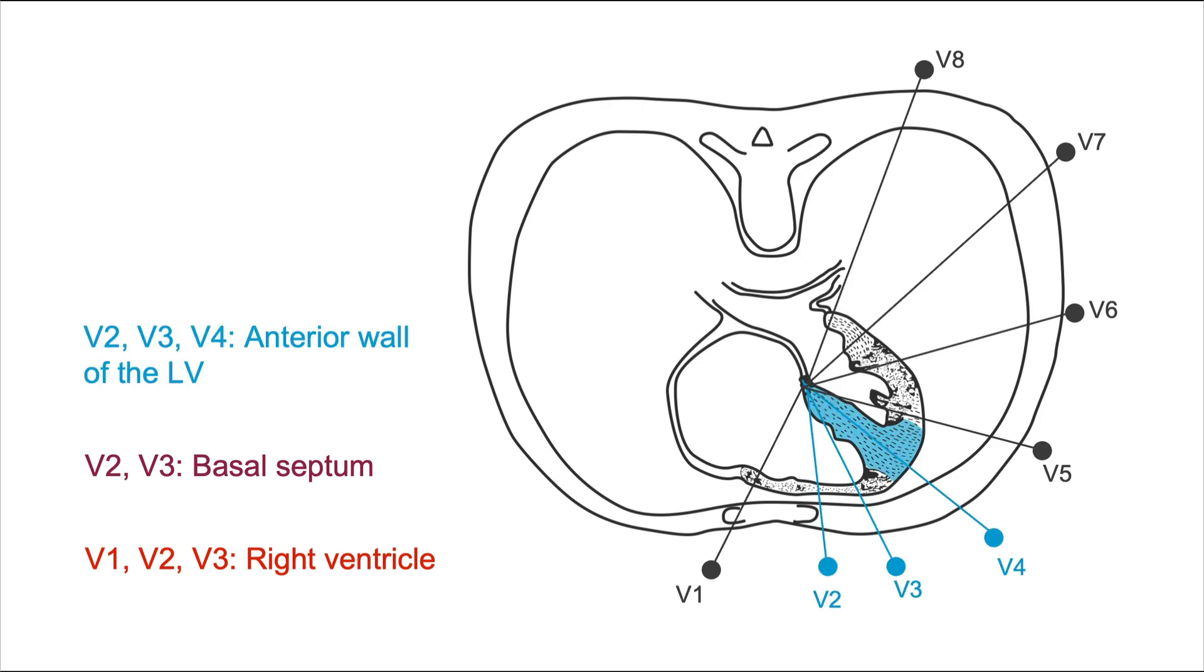What about V2, V3, and V4? What if you have changes, let's say, an ST elevation in those three leads? As you're going to learn a little later, ST elevations are a sign of acute myocardial infarction. Well, if you have an ST elevation in those three leads, it's the anterior wall of the left ventricle that's affected.